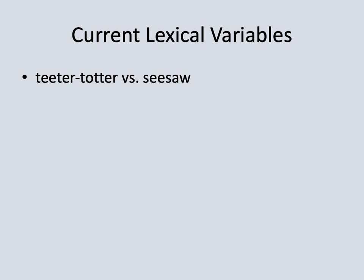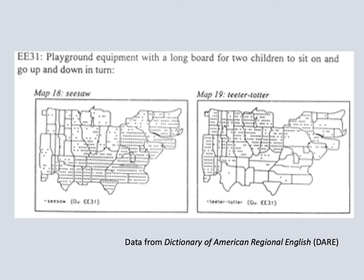A couple of other variables: teeter-totter or seesaw for the name of that playground equipment. These maps from the DARE project — the Dictionary of American Regional English — have states resized according to population. The map on the left shows people who called this piece of equipment a seesaw, and the map on the right shows where they called it a teeter-totter. Basically, if you cut the country in half diagonally, in the north and western parts teeter-totter is dominant, and in the south and eastern parts seesaw is dominant. For those from Missouri, that line cuts across the state: eastern Missouri tends toward seesaw and western Missouri toward teeter-totter.